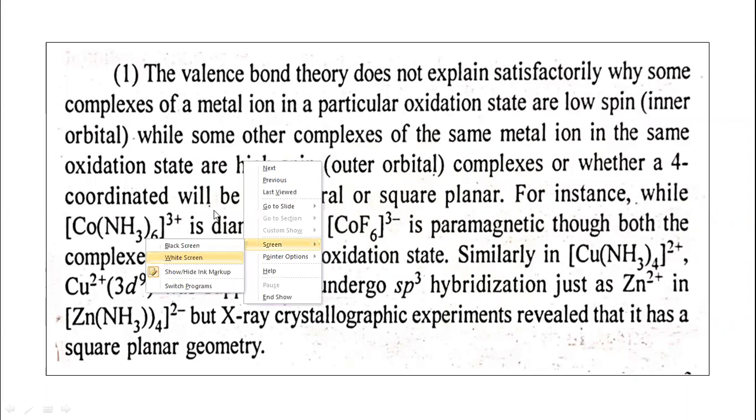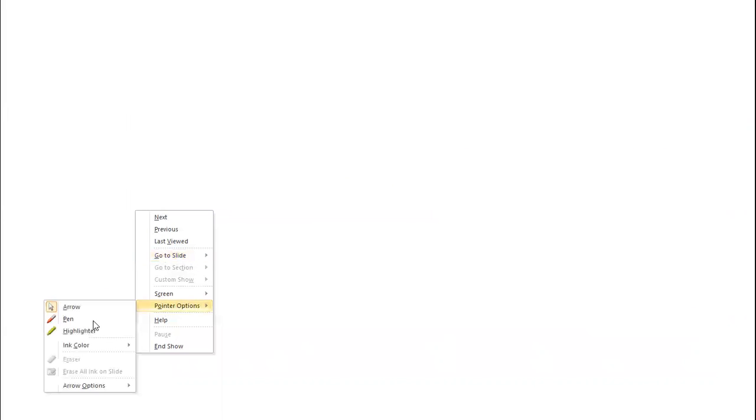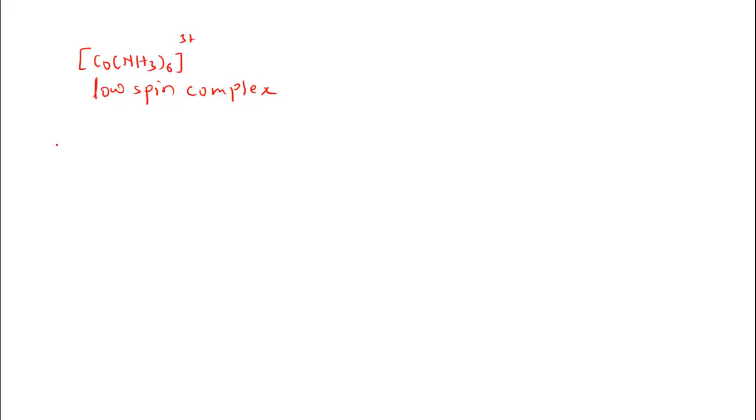Let us take an example to explain this. Consider the complex ion Co(NH₃)₆³⁺ — hexamminecobalt(III) ion. This complex is a low spin complex. The arrangement in this complex will be as follows: I would like to show you why it is a low spin complex.